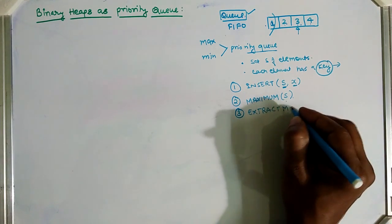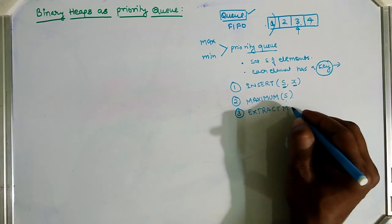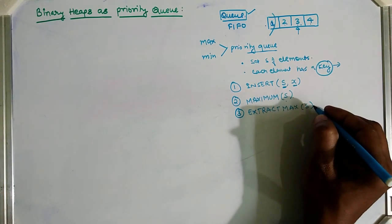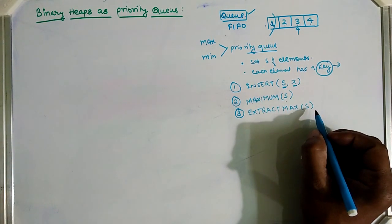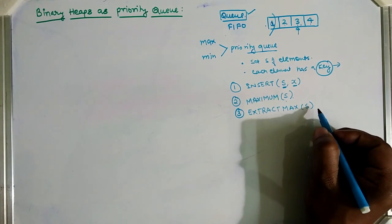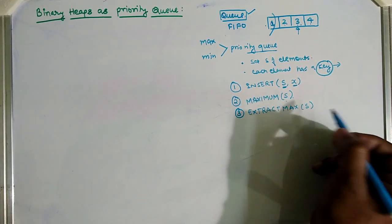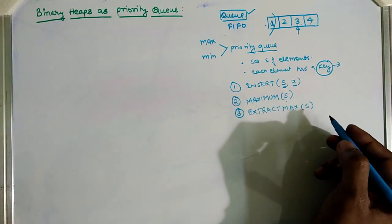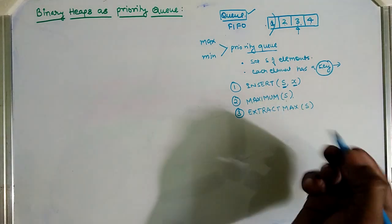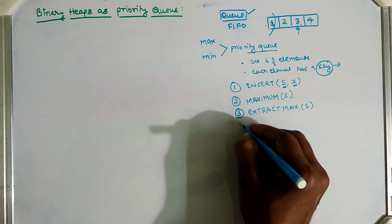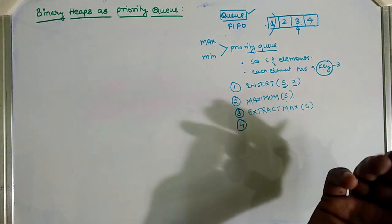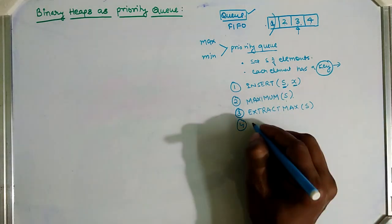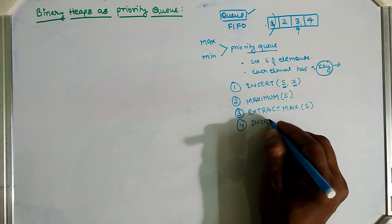The third operation is Extract Max. Since we are considering the max heap, Extract Max on set S removes the maximum element and returns it. The element with the largest key will be removed from the set and returned to the caller. Extract Max means we fetch the maximum element from the given heap.